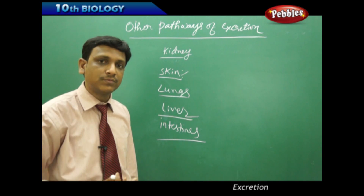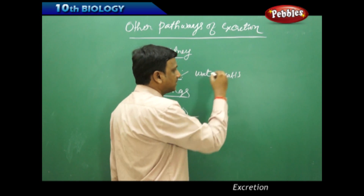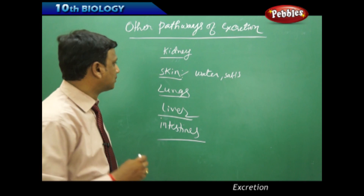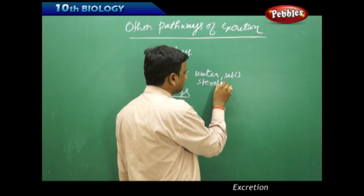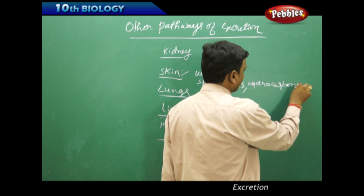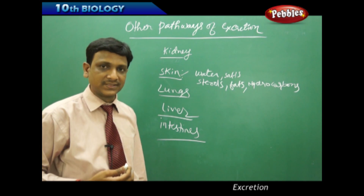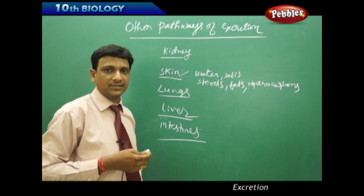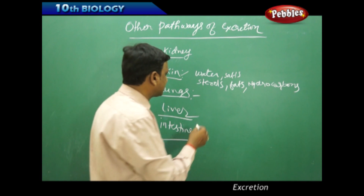The skin excretes waste through sweating — a large volume of water along with some salts is excreted out of our body. The skin has sweat glands, and also sebaceous glands which secrete sebum, containing sterols, fats, hydrocarbons, cholesterol, and other oily materials. The lungs excrete the waste gas produced during cellular respiration — carbon dioxide is excreted out by the lungs.